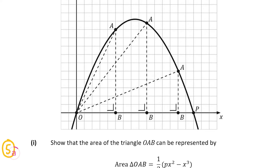The formula for the triangle is half times the base times the height, so we just have to work out the base and the height. The base is going to be along the x-axis. For example, if A is here, then the base is going to be from the origin to B, and this is just going to be the x value. So whatever the x coordinate of A is, that will be the base. The same thing applies for all three possible positions of A on the parabola — x will just be the base.